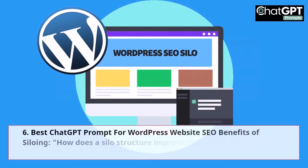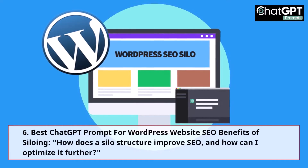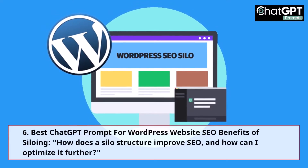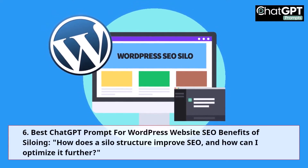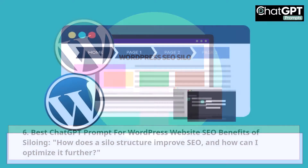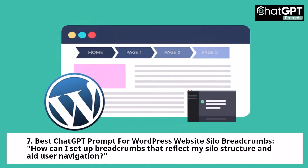6. Best ChatGPT Prompt for WordPress Website Silo Benefits of Siloing: How does a silo structure improve SEO, and how can I optimize it further? 7. Best ChatGPT Prompt for WordPress Website Silo Breadcrumbs: How can I set up breadcrumbs that reflect my silo structure and aid user navigation?